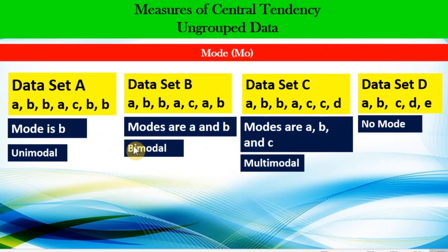That's it — our different measures of central tendency. For our next video, we will talk about the second summary measures called the measures of dispersion or variability. I will see you there.